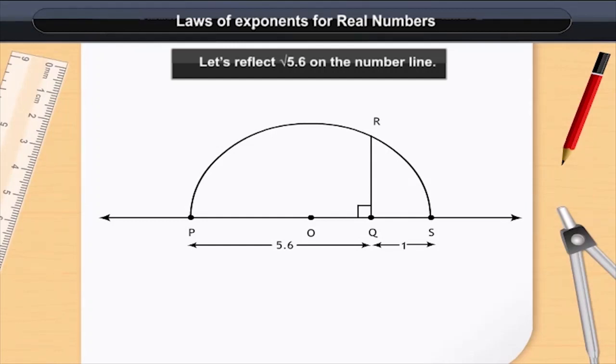Now, take Q as the center and draw an arc RT as shown here. This arc cuts at point T and makes length QT. QT is root 5.6 units. Let's prove this construction.